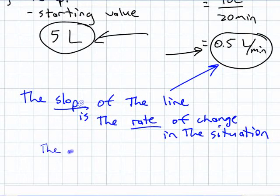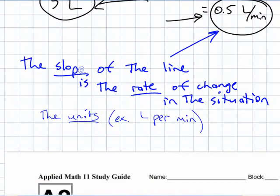And the units on the slope, for example here, liters per minute. The units on the slope come from the things you're dividing.